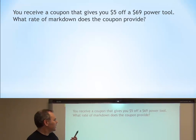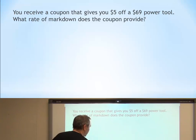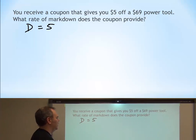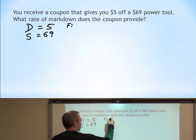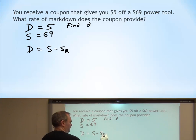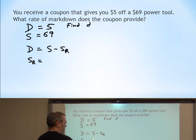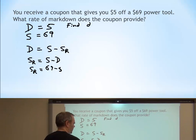Second example: a coupon gives you $5 off a $69 power tool. What rate of markdown does the coupon provide? First, we calculate the cash discount: the reduced price is $69 minus $5, which equals $64. Now we need to find the rate of markdown D.